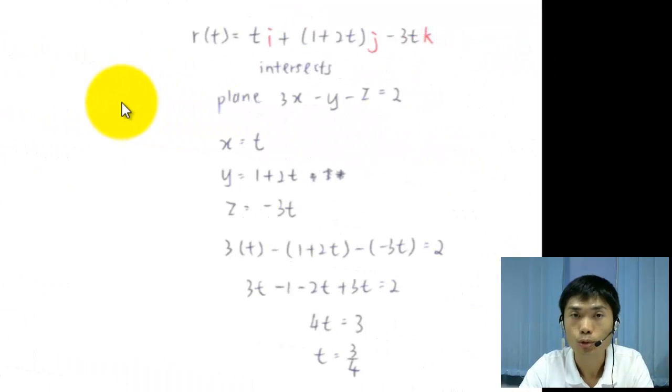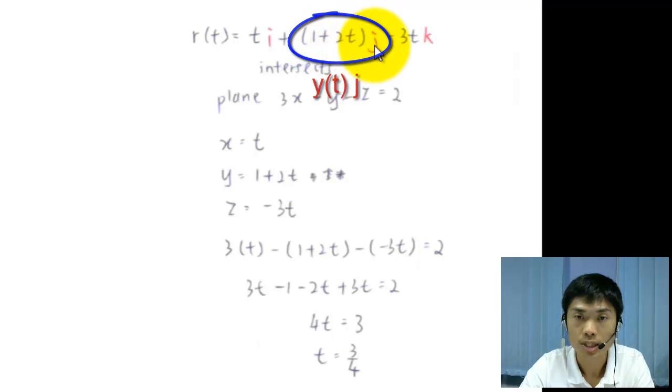And now we move on to 3-space curves. You have this position vector of r(t) equals ti plus (1 plus 2t)j minus 3tk, which intersects with another 3-space curve, a plane of 3x minus y minus z equals 2.